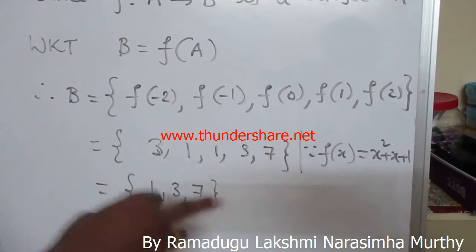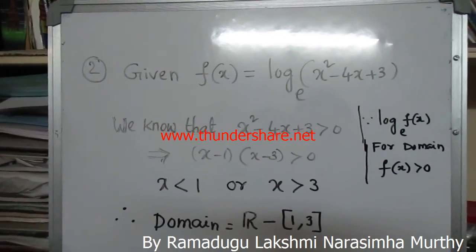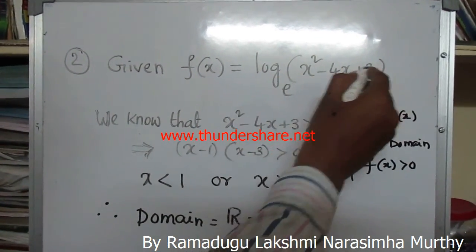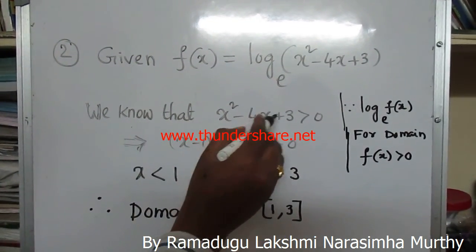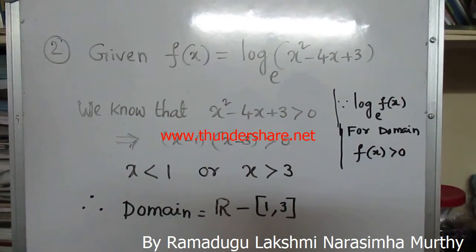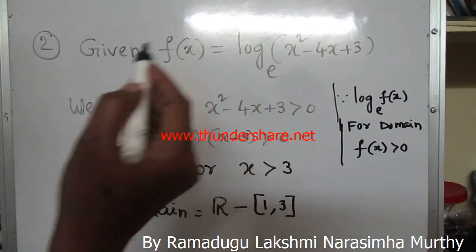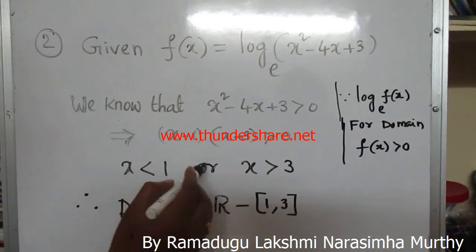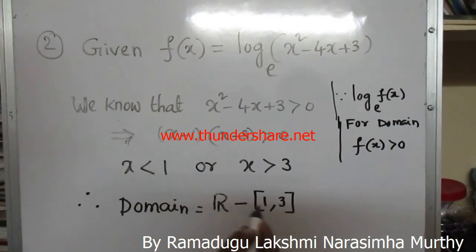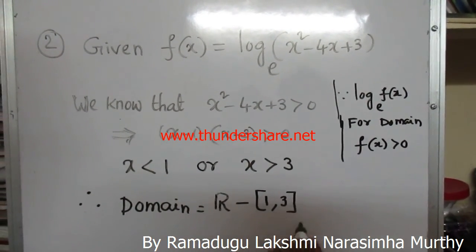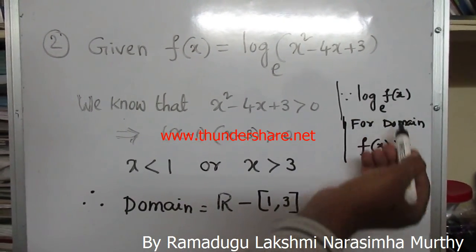Given f(x) = log base e of (x² - 4x + 3). To find the domain, x² - 4x + 3 must be greater than 0. Factoring gives (x-1)(x-3) > 0, so either x < 1 or x > 3. Therefore the domain equals ℝ minus [1, 3] (closed bracket). For log f(x) base e, f(x) must be greater than 0.